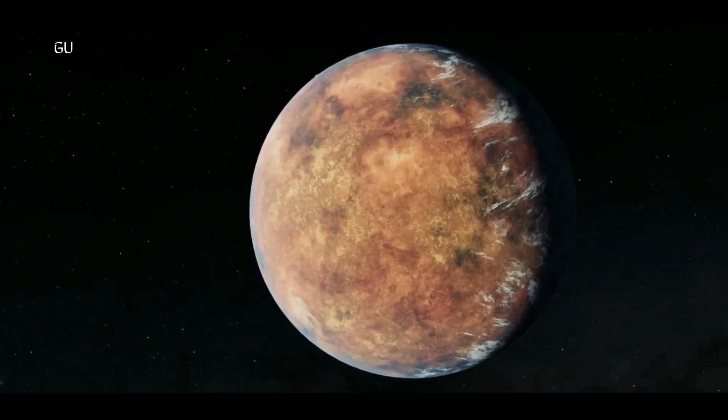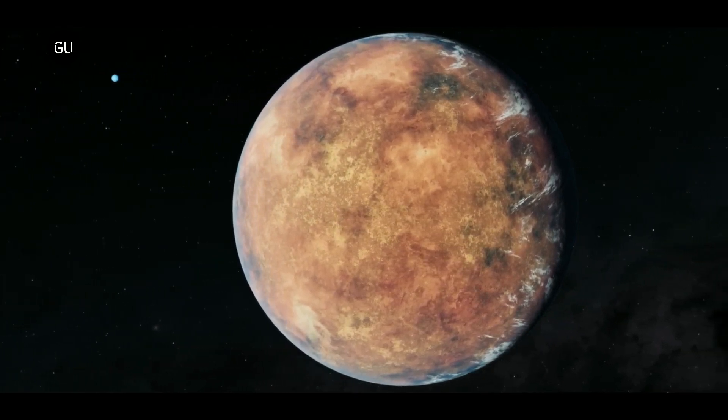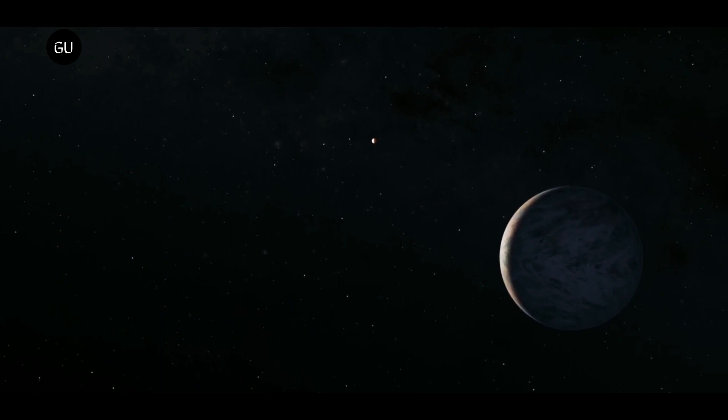Scientists have discovered an Earth-sized world that is likely rocky and 95% of the size of Earth. The planet, called TOI 700E, is orbiting around a star and could have liquid water on it.